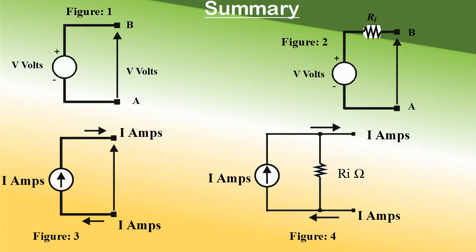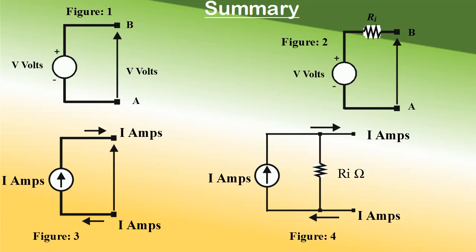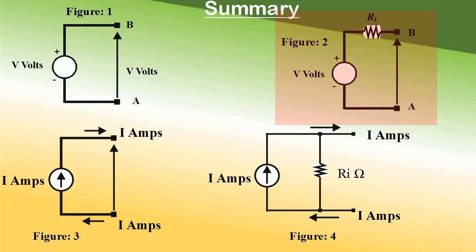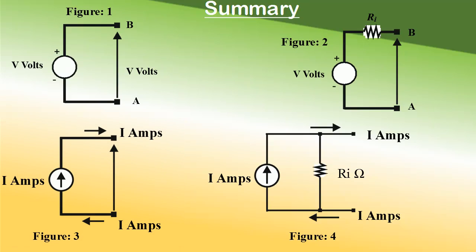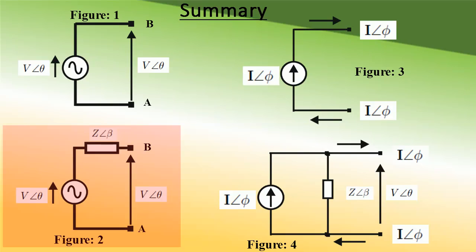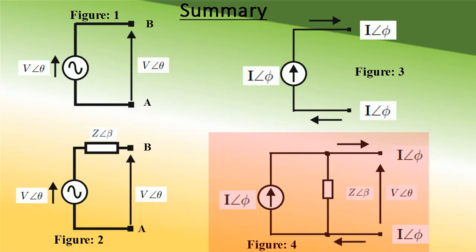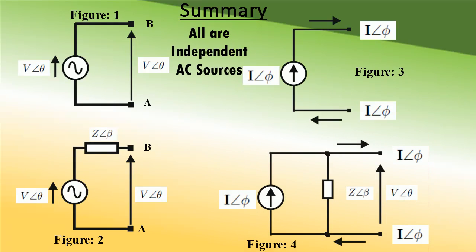I hope you are also in a position to identify the DC sources shown in the figure. All the sources shown are independent sources. Figure 1 is an ideal DC voltage source, figure 2 is a practical DC voltage source, figure 3 is an ideal DC current source, whereas figure 4 is a practical DC current source — and all are independent sources.